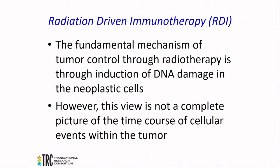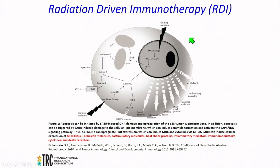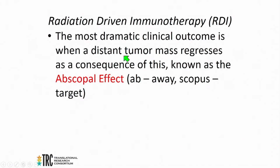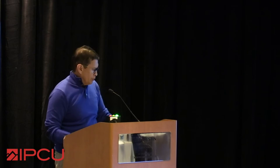Another area is radiation-driven immunotherapy. Ionizing radiation results in double-stranded DNA breaks that are more difficult for the body to repair. Simultaneously, there is release of cytokines, receptors, and adhesion molecules that result in massive stimulation of the immune system. The most dramatic clinical outcome is when distant tumor masses regress — known as the abscopal effect. Dr. Koo may discuss this in relation to radium-223, a systemic alpha-emitting particle used in combination therapies.